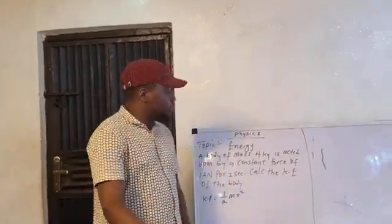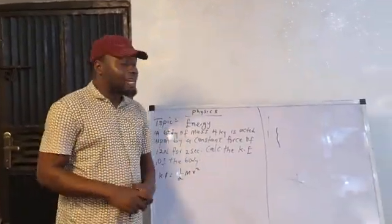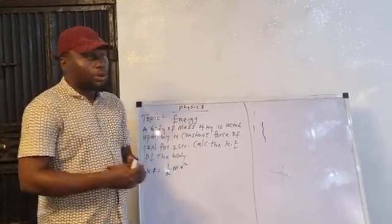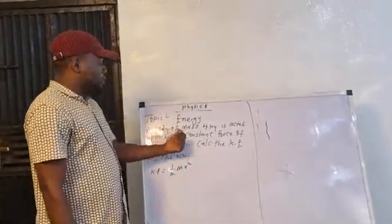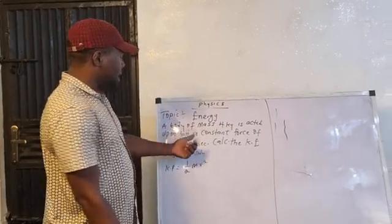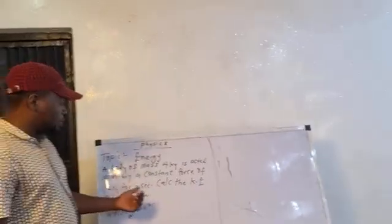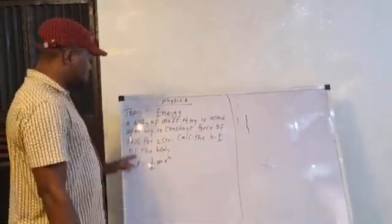Today we'll be solving questions on phases in regard to energy. We have a question before us today. It said, a body of mass 4KG decided upon by a constant force of 20 minutes in for 2 seconds has produced the kinetic energy of the body.